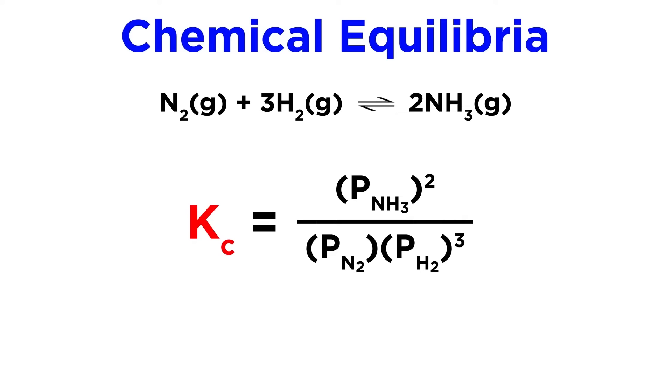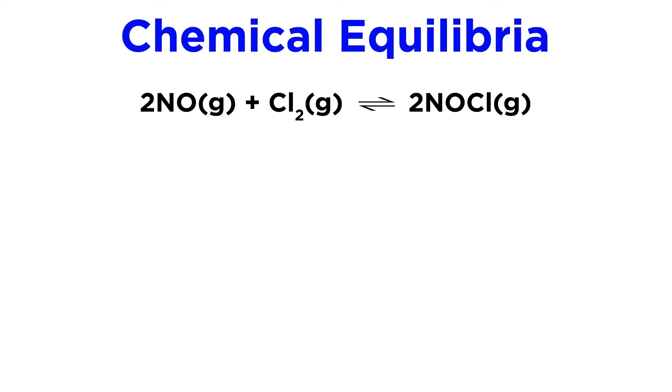In doing this, the equilibrium constant K will become not Kc, where the C stands for concentration, but Kp, where the P stands for pressure, since we are now dealing with partial pressures. Let's try an example.